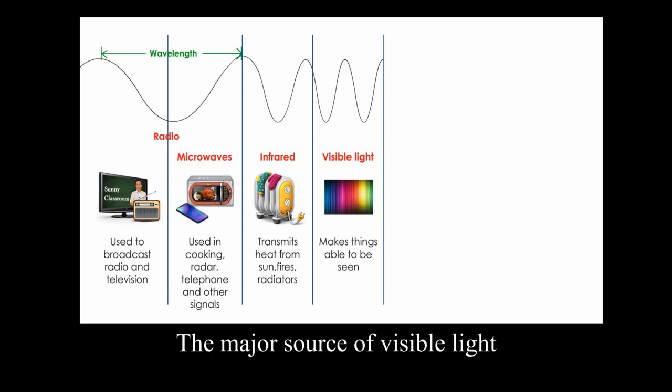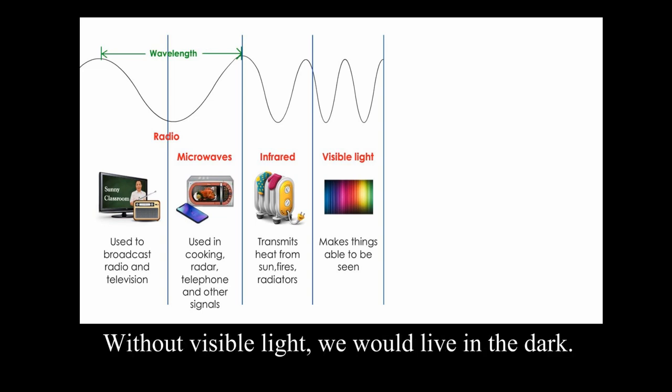Visible light. The major source of visible light to our planet is from the sun. Without visible light, we would live in the dark.